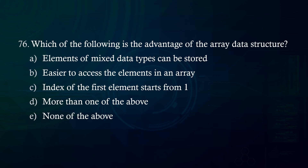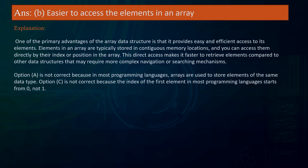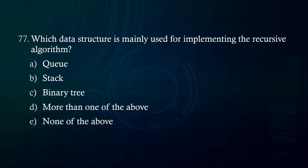Which of the following is an advantage of the array data structure? A. Elements of mixed data types can be stored B. Easier to access the elements in an array C. Index of the first element starts from 1 D. More than one of the above E. None of the above. Answer: Easier to access the elements in an array. Explanation: One primary advantage of the array data structure is easy and efficient access to its elements. Elements are stored in contiguous memory locations and can be accessed directly by their index. Option A is incorrect because arrays store elements of the same data type. Option C is incorrect because in most programming languages, the index of the first element starts from 0, not 1.